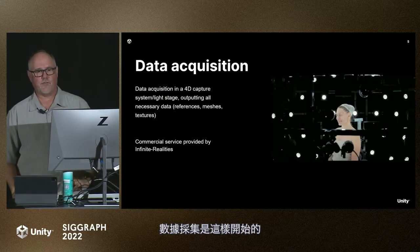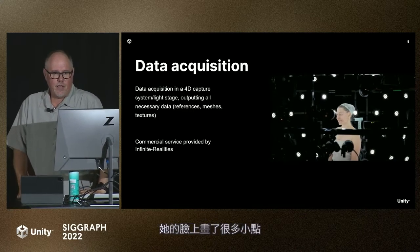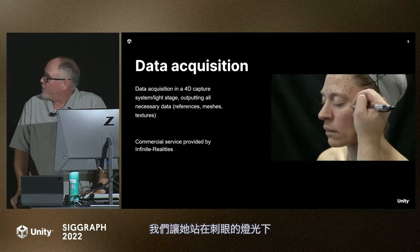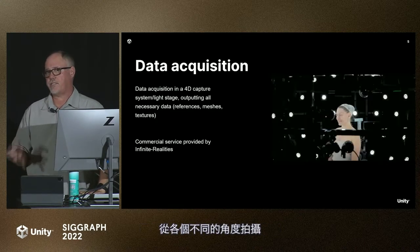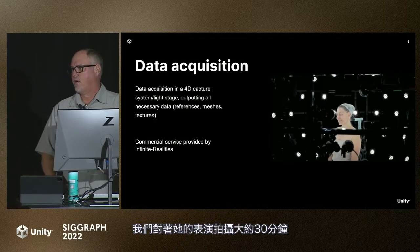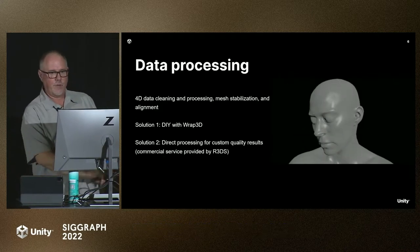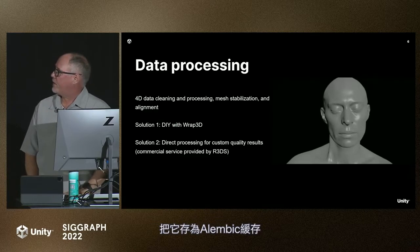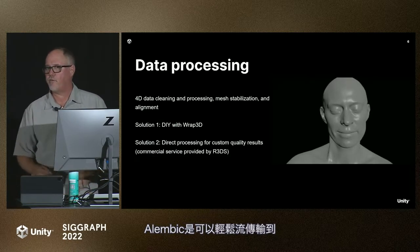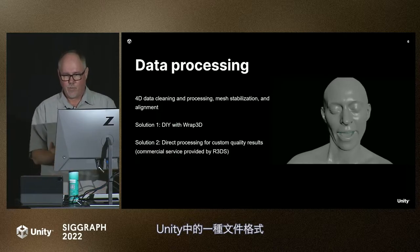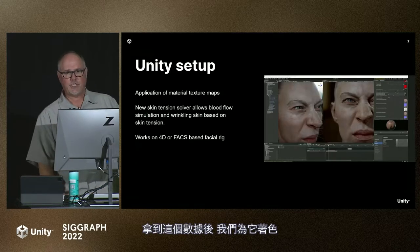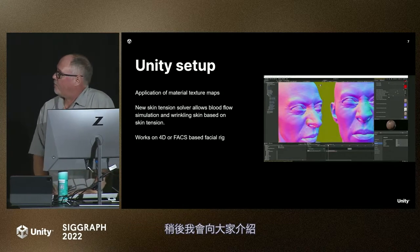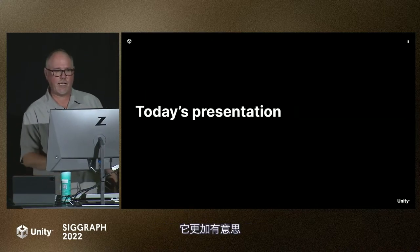The data acquisition starts off with the actress having little dots put on her face, then going through this torture of blinding light from all different angles at 60 frames per second with 60 cameras. We captured about 30 minutes of her performance. From there it was cleaned up and we were delivered a mesh — this becomes an Alembic cache, which is a file format that can easily stream into Unity. We were then given this to shade, bring into Unity, and add things like the skin tension solver and normal map detail.